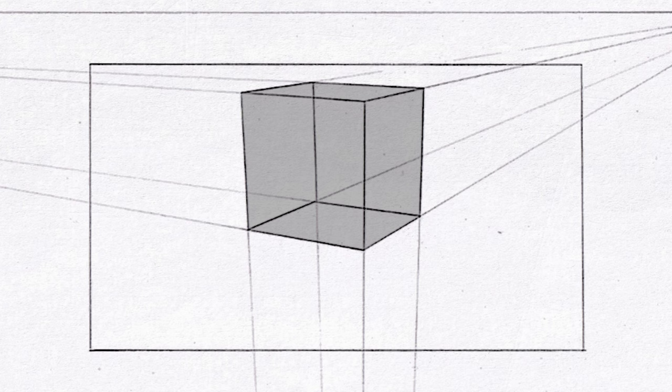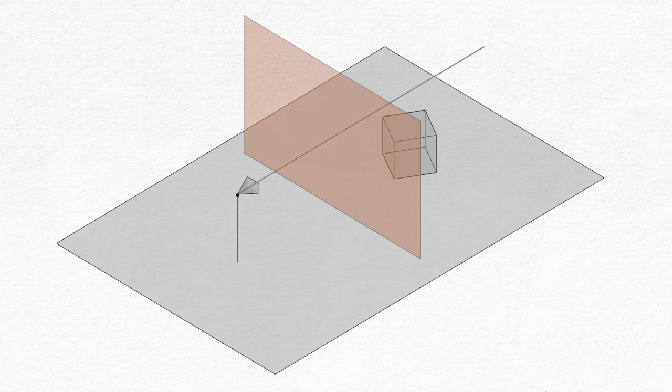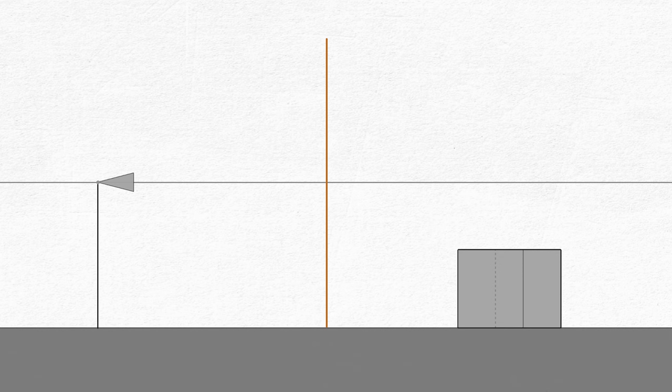The vertical lines are now converging to a vanishing point. But let's keep this simple for now and have our camera looking directly towards the subject parallel to the ground plane. Between the camera and the subject there needs to be what's called a picture plane.